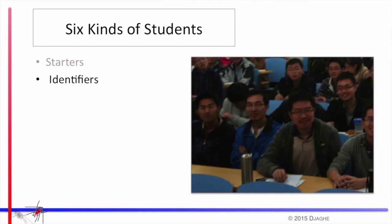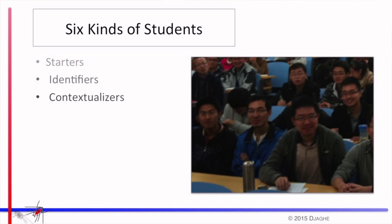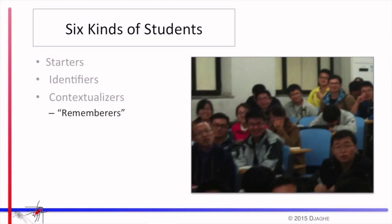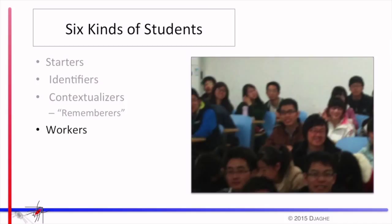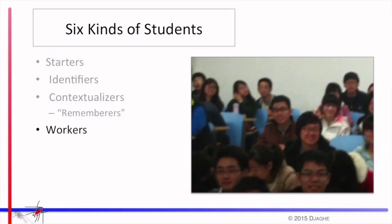The third group I call contextualizers — although one class particularly called them the 'rememberers.' These are the group that remember the prior lessons. In the inverted classroom, you discover that students don't think they need to remember what they've learned before, but a small group will, especially with encouragement. There is a fourth group called the workers — the ones that can take the material that others have identified or remembered from prior lessons and work on the problem. You need to encourage those who know more than they want to admit, and restrain those who are beyond their ability.